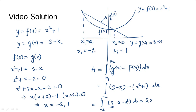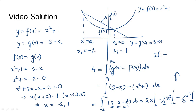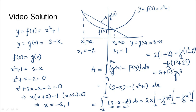Simplifying the integrand gives the integration from minus 2 to 1 of (2 minus x minus x squared) dx. Integrating term by term: 2x evaluated from minus 2 to 1, minus (1/2)x squared from minus 2 to 1, and minus (1/3)x cubed from minus 2 to 1. Substituting the limits: 2(1 minus (minus 2)) minus (1/2)(1 squared minus (minus 2) squared) minus (1/3)(1 cubed minus (minus 2) cubed).